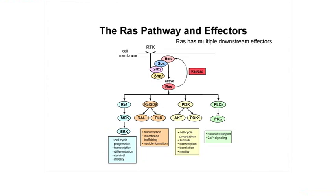When you have SOS, it speeds up RAS, which exchanges GDP for GTP — GTP is also an energy molecule, similar to ATP. RAS itself is a small GTP-binding protein that acts as an on and off switch. You can think of it simply as on and off — like a switchboard operator deciding where to plug the signal in.